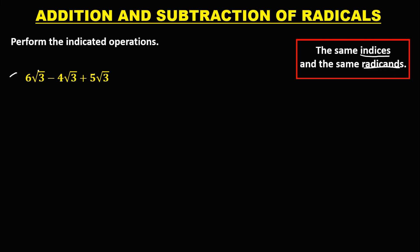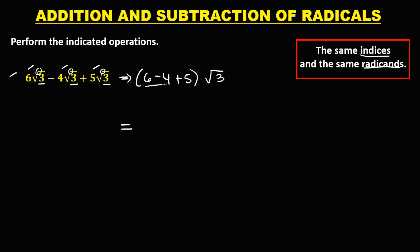For this first given, since the indexes are the same and the radicands are the same, we just add all the numbers outside. So this becomes 6 minus 4 plus 5, then copy the square root of 3. To simplify, 6 minus 4 is positive 2.